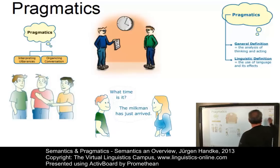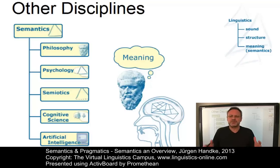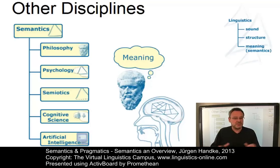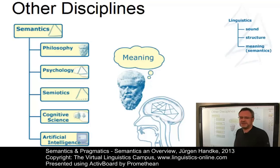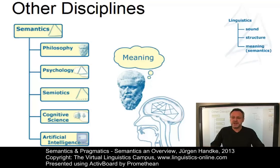Let's now look at the contribution of semantics in other disciplines. Linguists are not the only scholars with an interest in semantics. In fact, meaning is studied in various other academic disciplines, some of which are represented on the flipchart. While there is a significant degree of overlap among these disciplines as well as with linguistic semantics, they all have something idiosyncratic and unique in their approach.